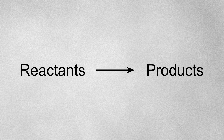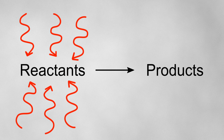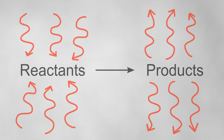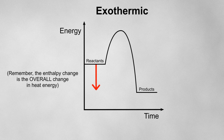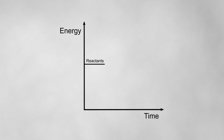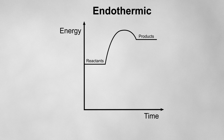During a chemical reaction, reactant bonds are broken, so energy will initially be taken in. Product bonds are then formed, so energy will then be given out. If less energy is taken in to break bonds than is given out to form bonds, overall energy has been given out, so the reaction is exothermic, meaning the enthalpy change will be negative. If more energy is taken in to break bonds than is given out to form bonds, overall energy has been taken in, so the reaction is endothermic, meaning the enthalpy change will be positive.